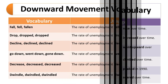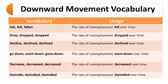Moving on to downward movement — we also have certain verbs: 'fall,' 'drop,' 'decline,' 'go down,' 'decrease,' and 'dwindle.' You can use any of these words when talking about a downward trend. By using these words you will be able to avoid repetition — instead of repeating 'decrease' again and again, you can replace it with any one of these words and produce variety in your vocabulary.